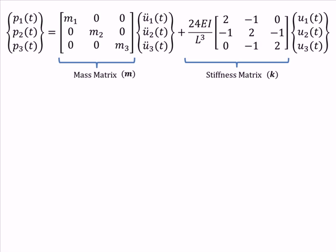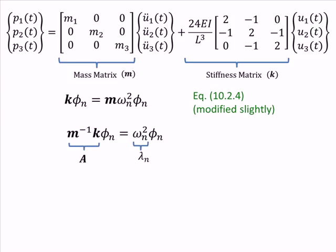To find the natural frequencies and mode shapes, we start with this expression from your textbook. We then rearrange slightly and define the matrix A and the scalar lambda n, which leads to the classic eigenvalue and eigenvector equation, with lambda n being the eigenvalue and phi n being the eigenvector.